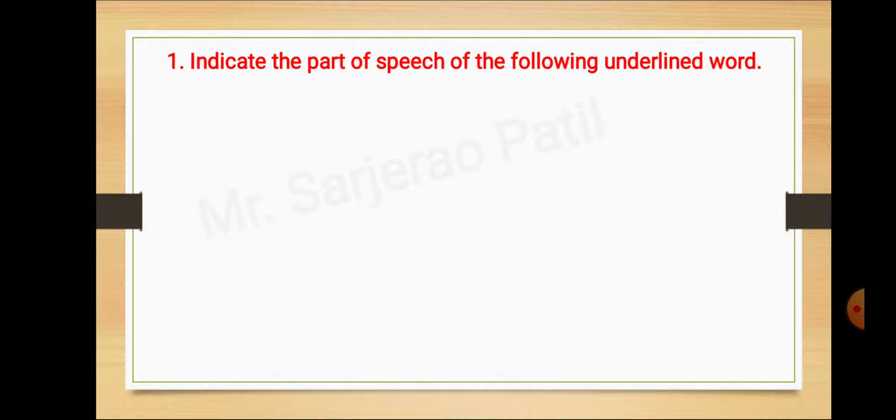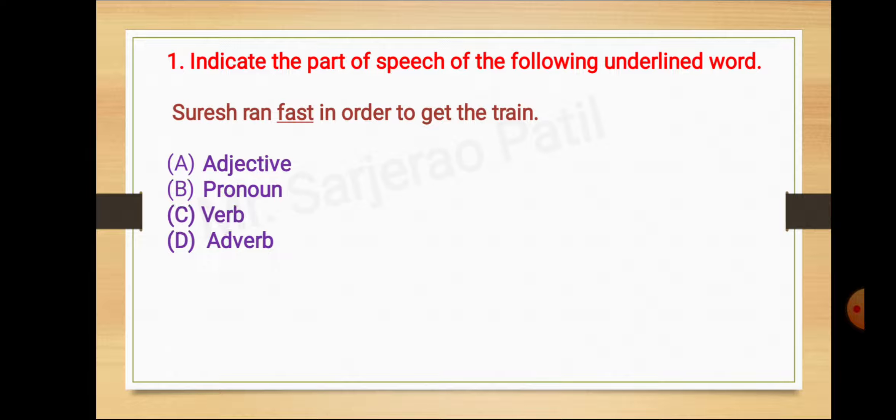Question number first: indicate the part of speech of the following underlined word. First, Suresh ran fast in order to get the train. Now here the word fast is underlined, and you need to identify the part of speech for this word. The alternatives are: A adjective, B pronoun, C verb, D adverb.